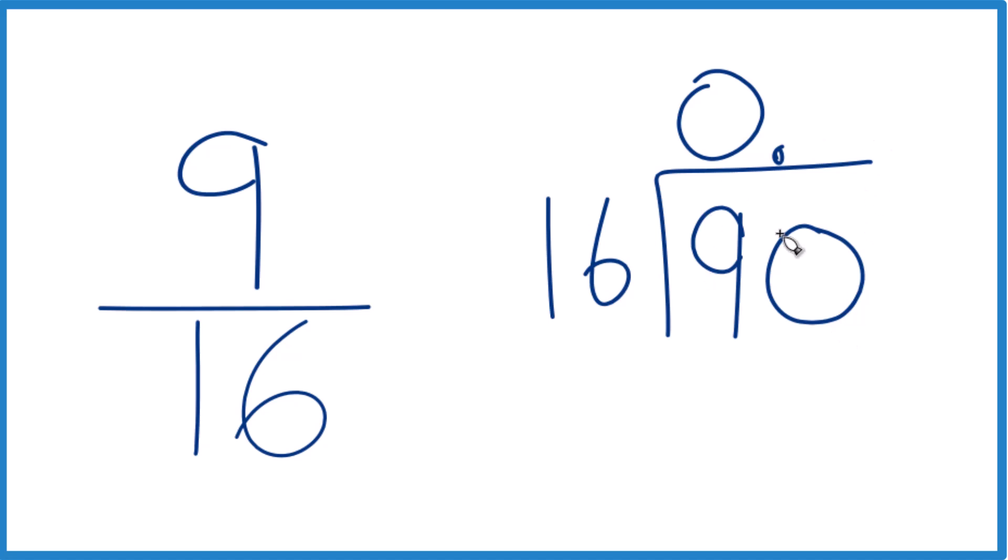So now, let's see, maybe 5 times 6, that's 30, 5 times 1 is 5, so 5 plus 3 is 8, so 80. 5 times 16 is 80, so let's subtract, and we get 10.